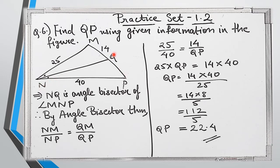When an angle bisector is involved, we will be using the angle bisector theorem. NQ is the angle bisector of angle MNP because angle MNQ equals angle QNP, as given in the diagram. Therefore, by the angle bisector theorem, MQ upon QP equals NM upon NP — because the bisector divides the opposite side in the same ratio as the other two sides.